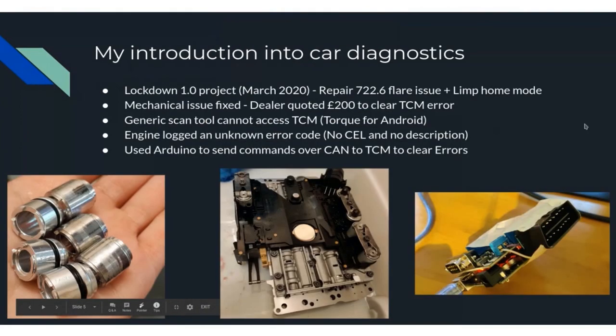Introduction into car diagnostics. Back in March 2020, lockdown 1.0, I decided to try repairing my automatic transmission. It was getting an issue whereby it would enter limp home mode — eventually entering limp home mode permanently, meaning I could not shift out of second gear. I was able to fix the mechanical issue, but the transmission computer still had an error code stopping it from shifting out of second gear. I contacted my local Mercedes dealer and asked for a quote to plug their diagnostic tool in and clear the code. They quoted 200 pounds, which I very politely declined.